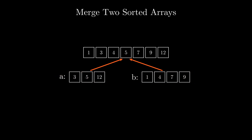Given these two arrays, we would like to merge them into a resulting array sorted in increasing order. To do that, we will have two pointers indicating which elements we are processing right now. On each step, we compare these two values and place the smaller one into the resulting array while moving the pointer of the smaller value forward. Notice that the pointer of the larger element doesn't move, and that ensures we process elements one by one from smallest to largest.